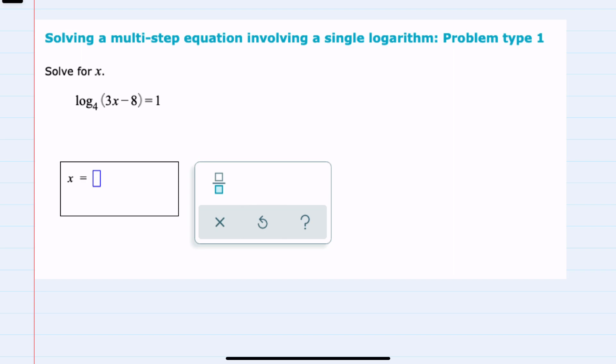Here we are solving for x, and since I have a logarithm equal to a constant, to solve, I can convert this to exponential form by taking the base of the logarithm, 4. The exponent that the 4 would be raised to is the constant on the other side of the logarithm. Here, 1 equals what we were taking the logarithm of, so 3x minus 8.